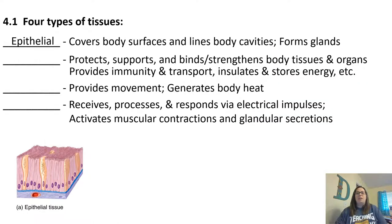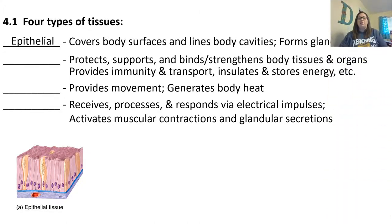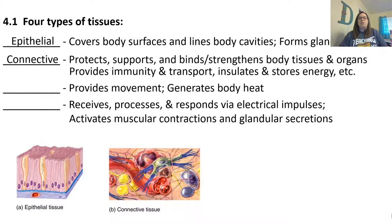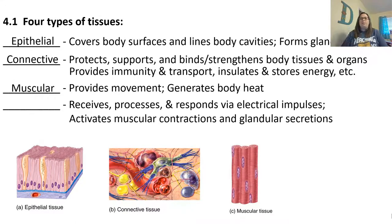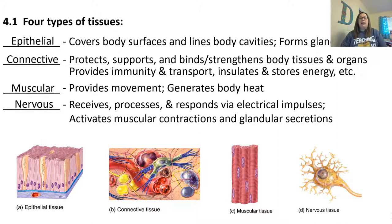There are four types of tissues. Epithelial tissue covers your body surfaces and lines your body cavities, and also helps form glands. Connective tissue has lots of jobs: protecting, supporting, binding, strengthening our body tissues, and also helping with immunity, transport, insulation, and storing energy. Muscular tissue provides movement, generating body heat. Nervous tissue receives, processes, and responds via electrical impulses, activating muscular contractions and glandular secretions.